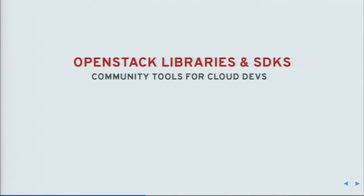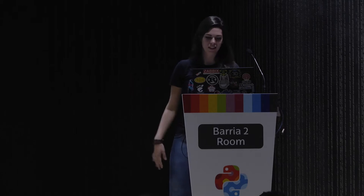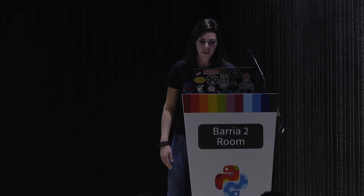Now let's talk about the libraries and SDKs we currently have in the OpenStack ecosystem based in Python. There are SDKs and libraries for a lot of languages — if you check the wiki page that lists all of them, you'll see several alternatives for different languages and it looks like a mess. For the Python ones, let's look at the ones worth mentioning. We need libraries and SDKs because there is no simple, straightforward way to interact with an OpenStack cloud — we have one library per service, each with a different user experience.